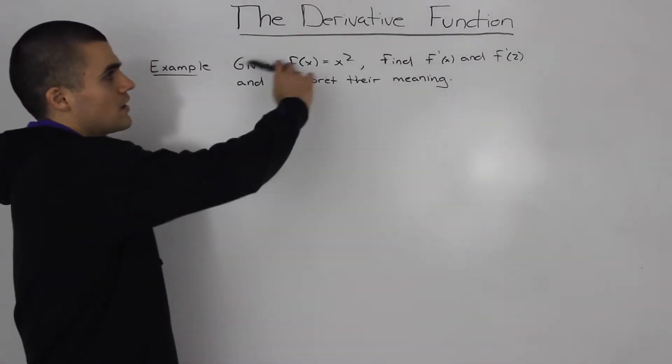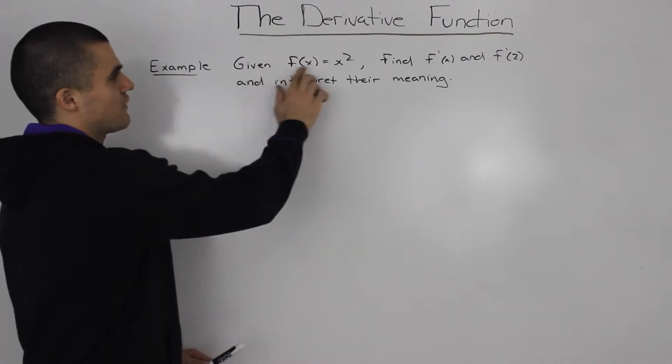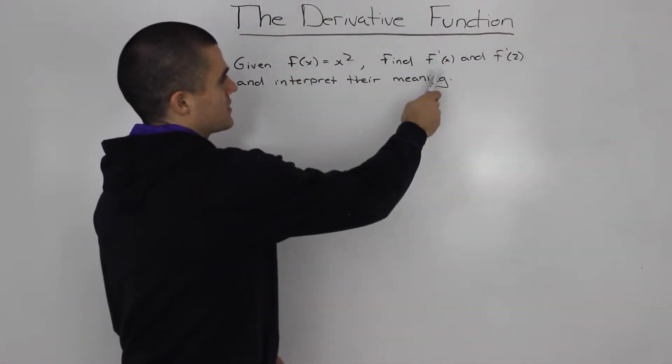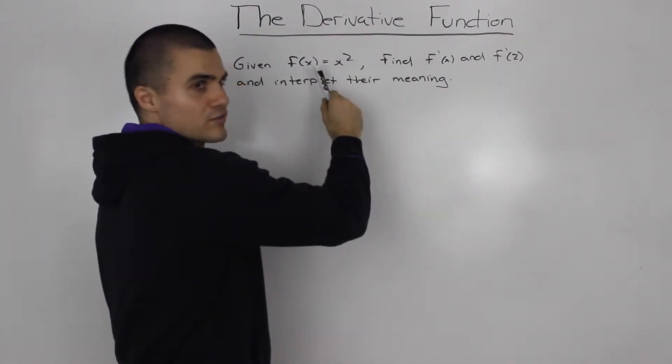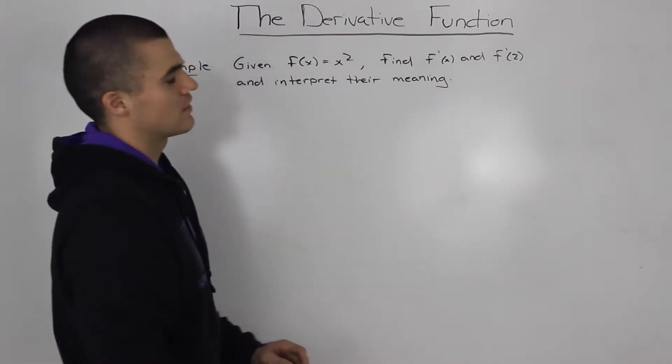Alright, continuing on with the derivative function, let's do an example here. So given f(x) equals x squared, find f'(x) or the derivative of f(x) and f'(2) or the derivative of f(x) at point 2 and interpret their meaning.